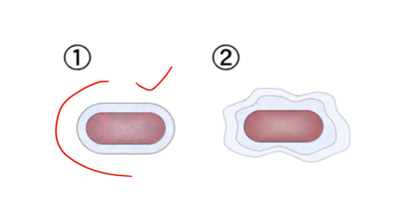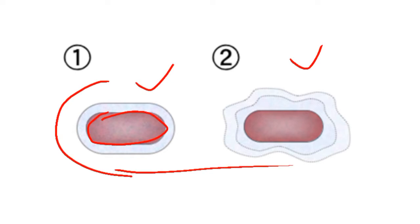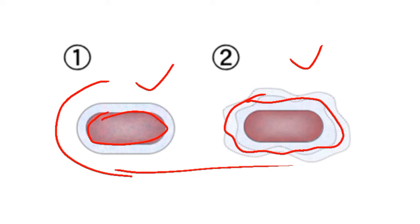Slime layer and capsule — both of these are glycocalyx. As you can see here, this is capsule and this is slime layer; both of these are glycocalyx. The coating of polysaccharide that surrounds the bacteria is called capsule, while the coating of polysaccharide that is secreted by bacteria is called the slime layer. Both are coatings of polysaccharide, hence both are glycocalyx.